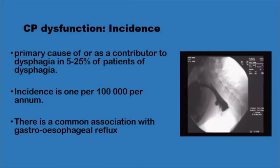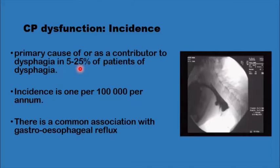How common is cricopharyngeal dysfunction? Fairly common. The incidence is about one new case per 100,000 population per annum. This translates to about 5 to 25 percent of patients presenting primarily with dysphagia.